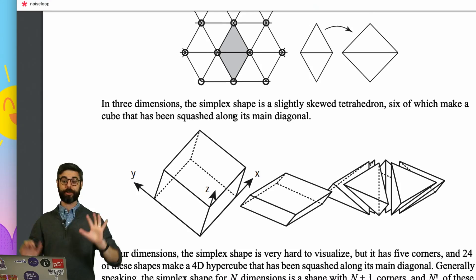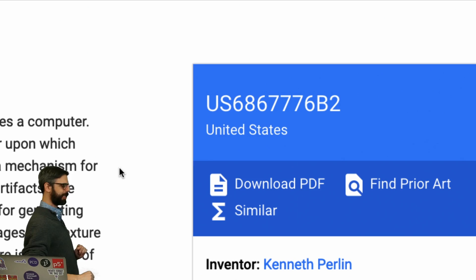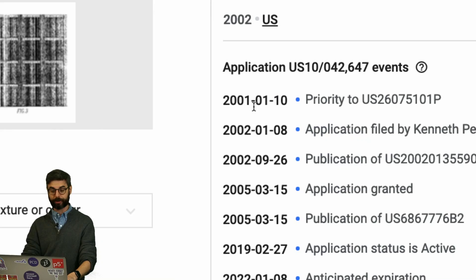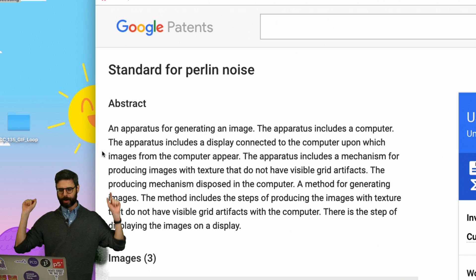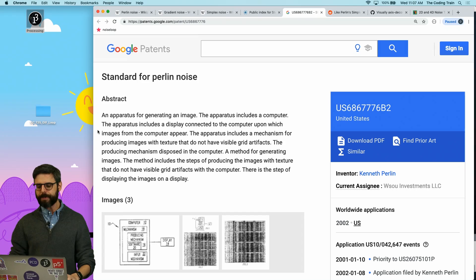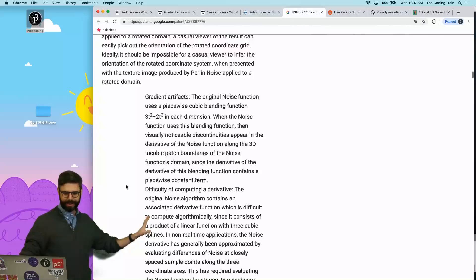Now, one of the oddities about simplex noise is that there's a patent for it. This, if I'm correct, is the patent. Patent US-6867776B2. Inventor Kenneth Perlin, you can download the PDF. This was filed in 2001, at the time of the invention of simplex noise. And this is an apparatus for generating the image. The apparatus includes a computer. The apparatus includes a display connected to the computer upon which images from the computer appear. I will stop now doing my dramatic reading of this patent.